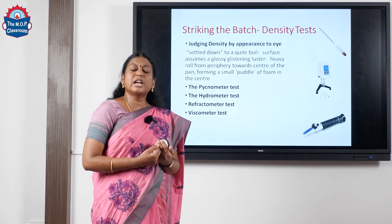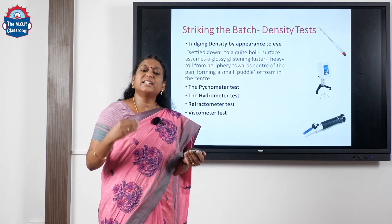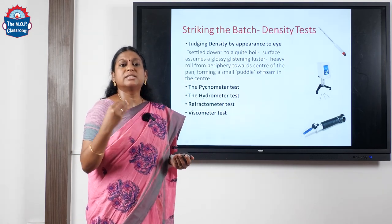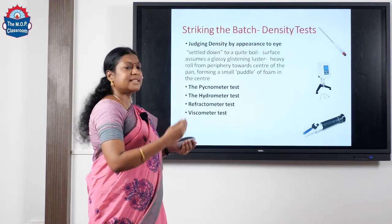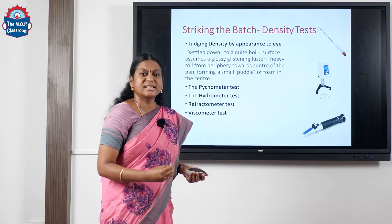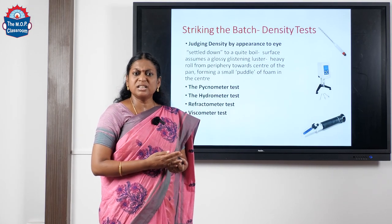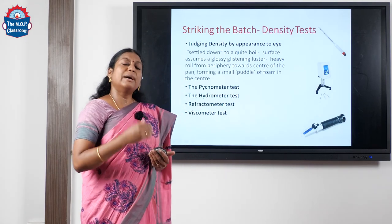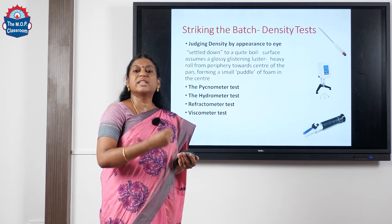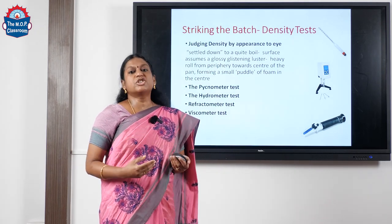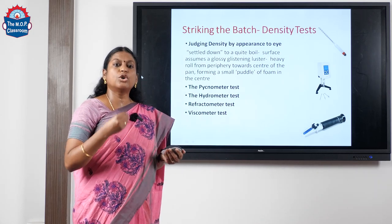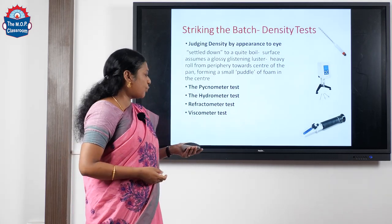The density check can be done by different methods. We can judge by appearance — if using a batch pan evaporator, an experienced person can look at the milk and check whether the desired density is reached by looking for the settle-down effect, the glossy texture, or how it forms a puddle moving from the periphery towards the center. When using a mechanized system like multiple-effect evaporators, we have sampling devices to draw samples, and we use objective evaluation instruments such as the ebuliometer, hydrometer, refractometer, or viscometer for the density check.